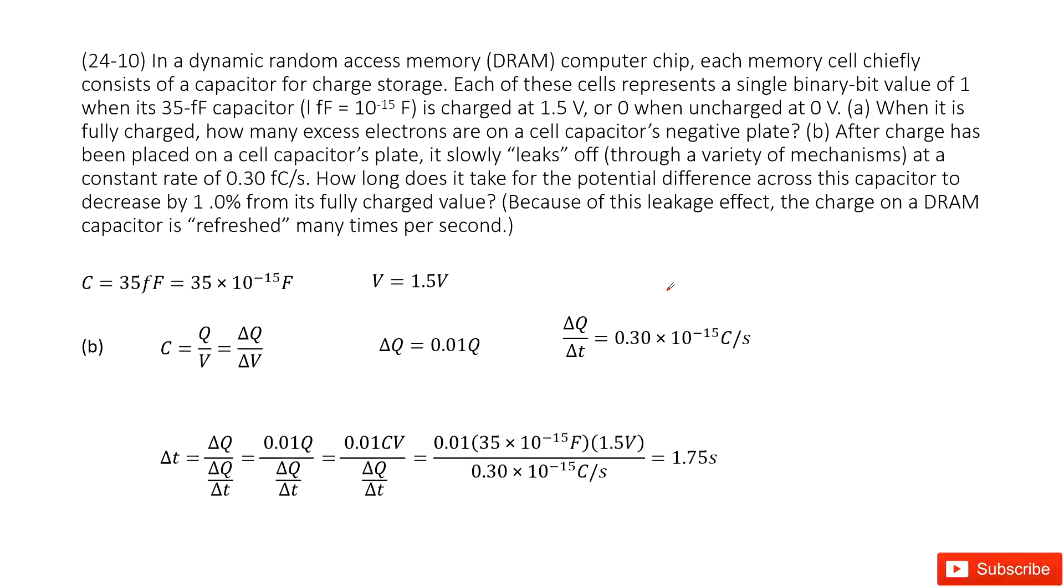The next part tells us this capacitor will decay with time, and it decays at a constant rate of 0.30 coulombs per second. So we write the constant rate there, the decay rate. It also tells us after a period, after a duration,